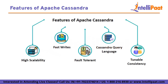Then we have tunable consistency. Apache Cassandra allows for a great deal of performance tuning on top of your typical JVM performance tuning. Another option often overlooked is the table-level compression option that can be configured when creating or altering a table — a feature that is enabled by default.